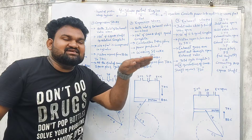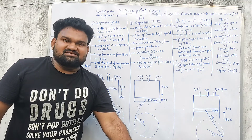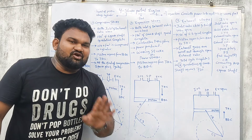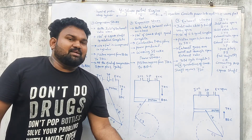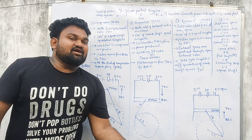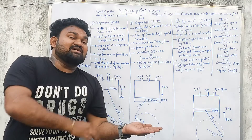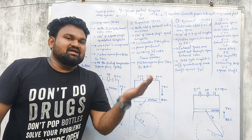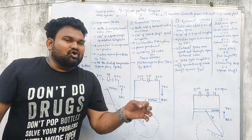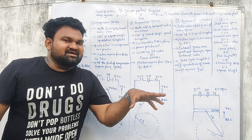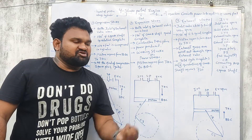The crankshaft completes half a revolution. In the second stroke — compression stroke — the piston moves from bottom dead center to top dead center. The air plus fuel mixture is compressed. At the end of the compression stroke, the spark is ignited, and combustion takes place.